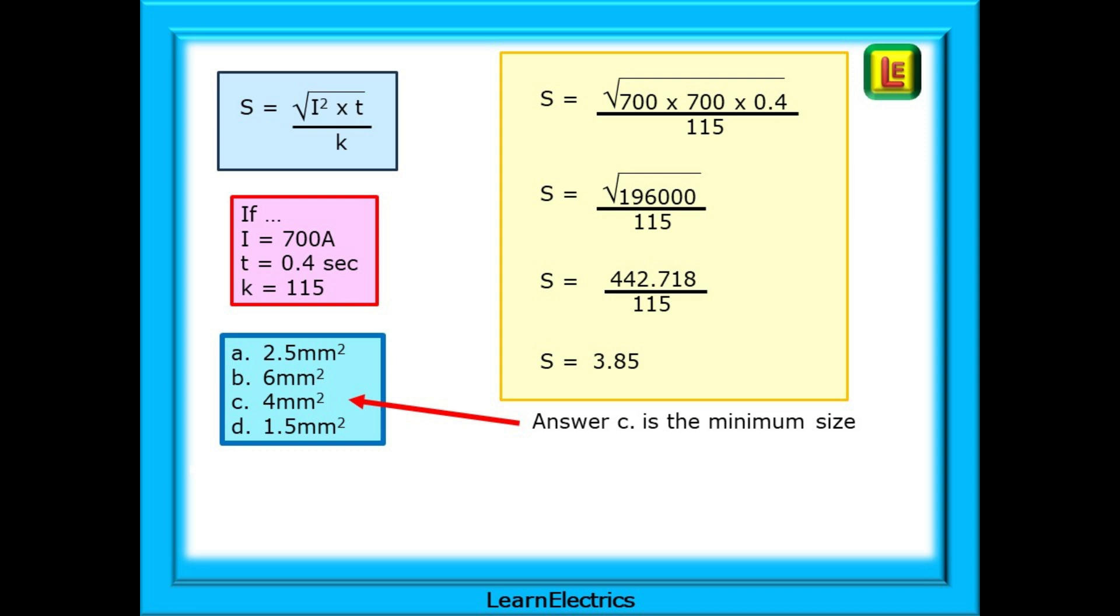We will use the formula unchanged. Follow the working out in the yellow box. Work everything out that's beneath the square root first. Now we have the square root of 196,000. Square root this and the calculation is now 442.718 divided by 115 and the answer, the minimum size for the earth conductor is 3.85 square millimeters. As this is the minimum size we should choose the nearest size that is equal to or greater than 3.85 which is 4 square millimeter conductor. Answer C. So easy if you follow a methodical approach.